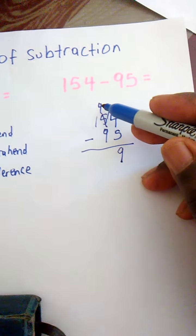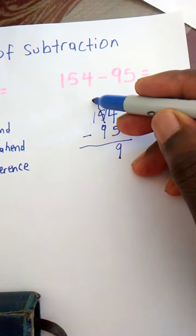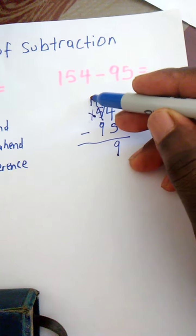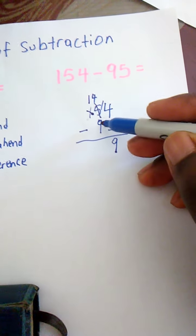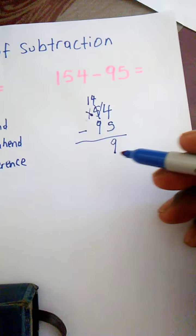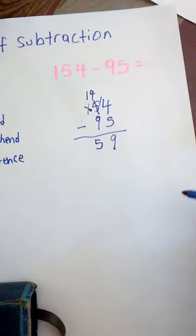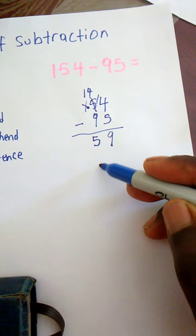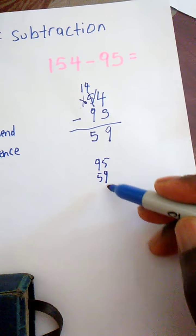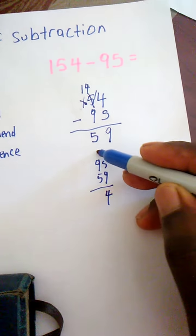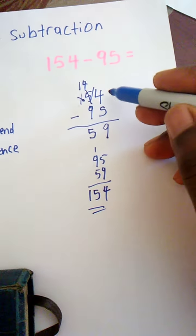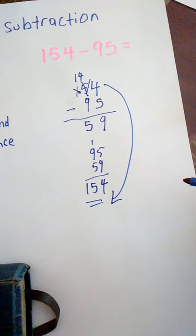And 9 from 4, we can't. So we just make it 14. Because we're taking this 10 here and put it right here. So it becomes 14. 9 from 14 will give you 5. And if you want to prove it, you could add back your 95 plus 59, 10 and 5, 4, 10, 15. It gives you back 154, which is up there as well.